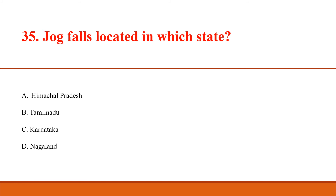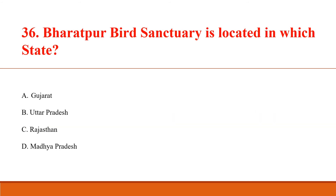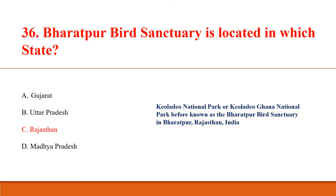Jog Falls is located in which state? Answer C: Karnataka. Jog Falls is a waterfall on the Sharavathi river, located in the Western Ghats near Sagar Taluk of Uttara Kannada district, Karnataka, India. It is the second highest plunge waterfall in India. Bharatpur Bird Sanctuary is located in which state? Answer C: Rajasthan. It is also known as Keoladeo National Park or Keoladeo Ghana National Park, in Bharatpur, Rajasthan, India.